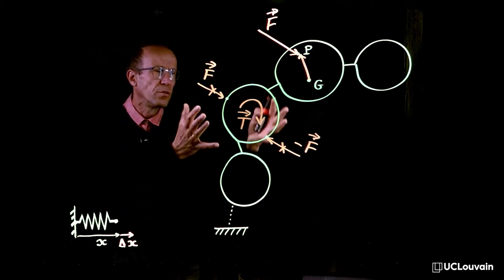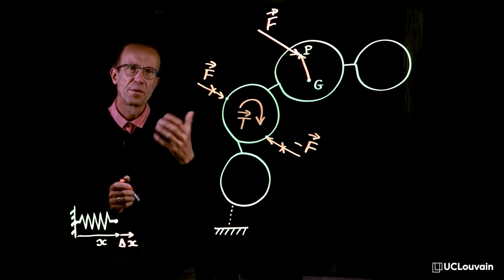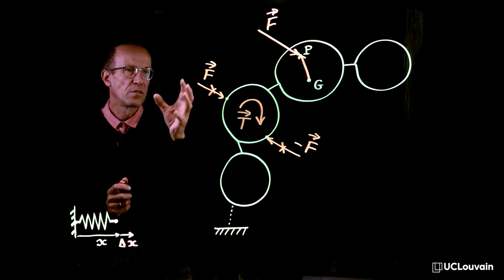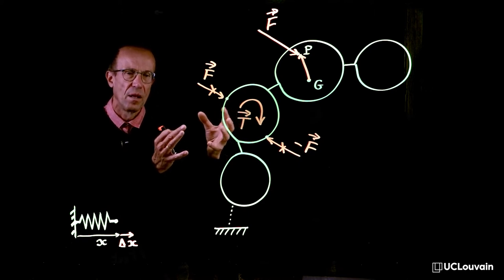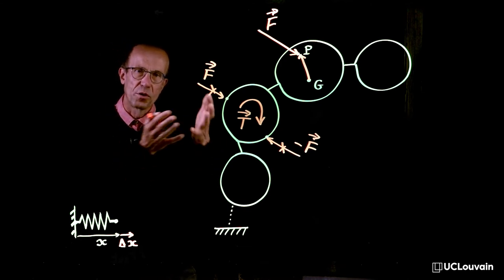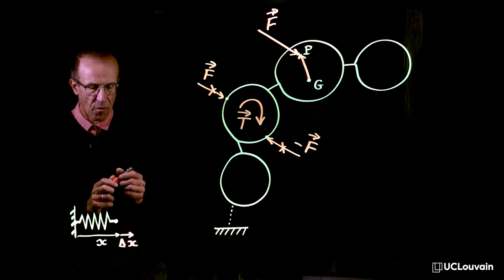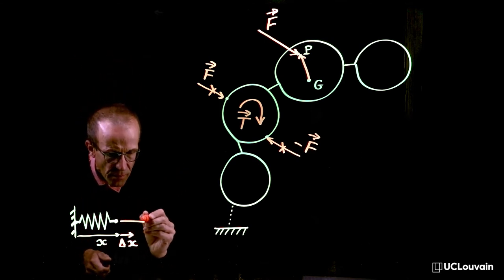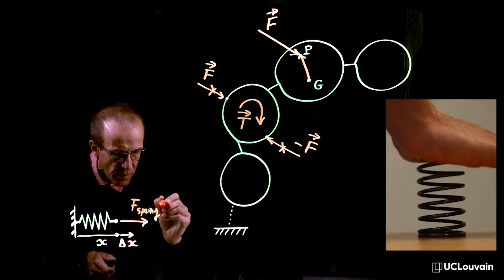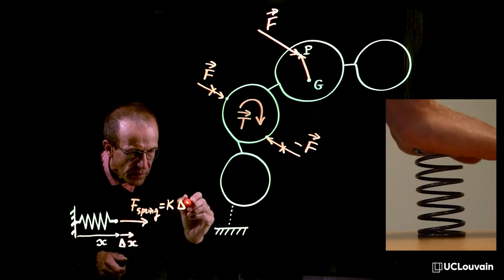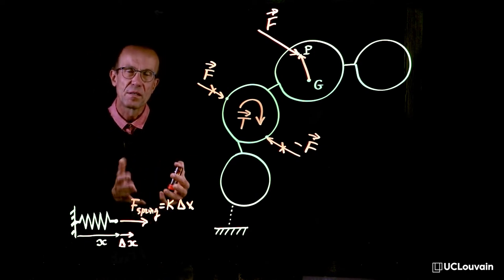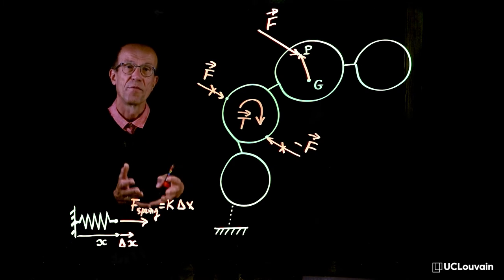Finally, any forces on the system must be represented by its constitutive law. A constitutive law is the way the force is related to the kinematics of the system. You can find it for a damper, for the force of the ground on the tire, or for a spring, for which simply the force is proportional to the spring deformation. These laws must be implemented by the user according to the laws of physics.